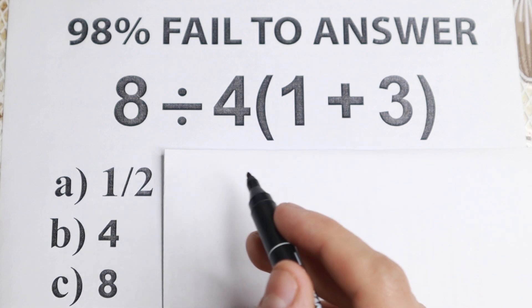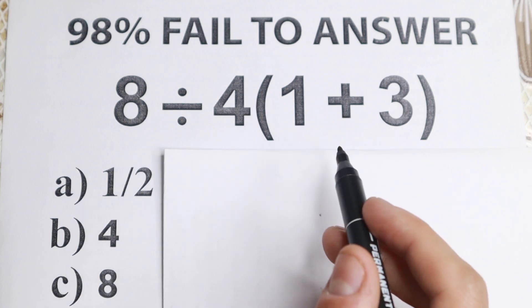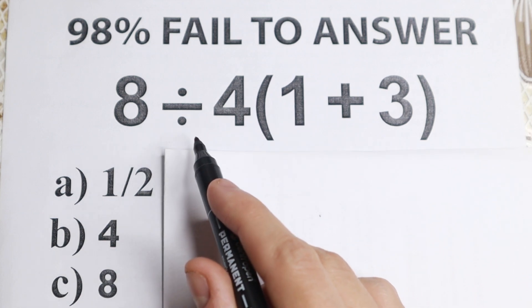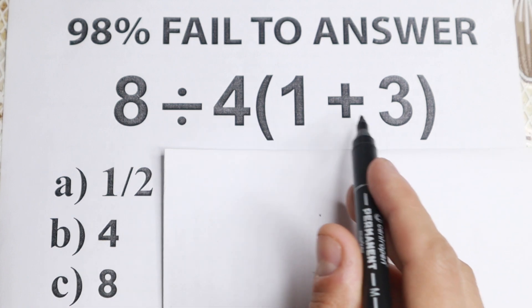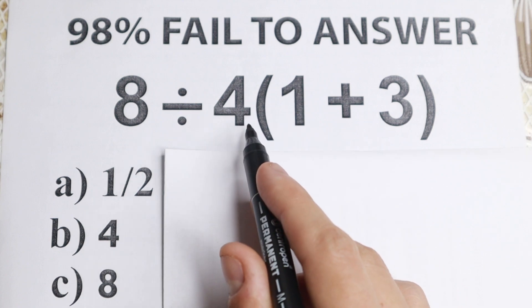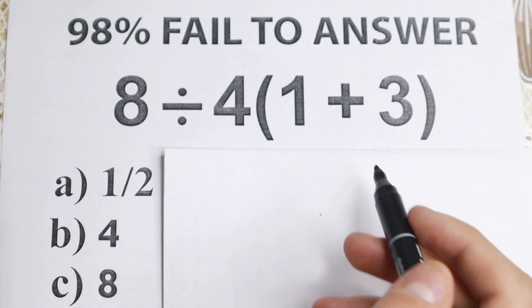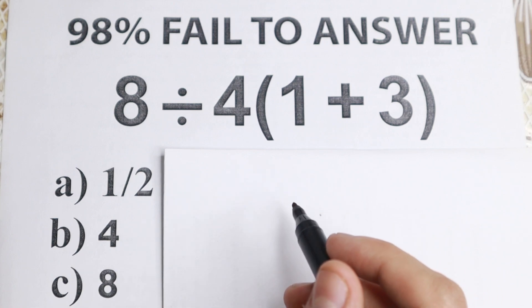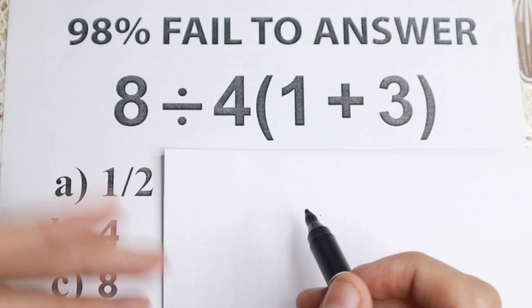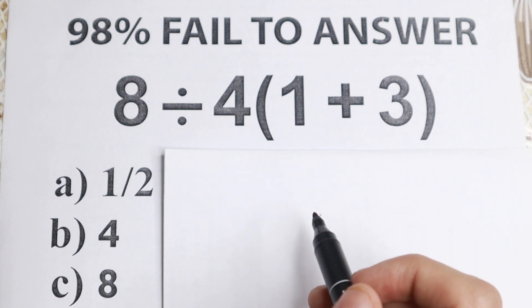Because obviously whatever order you select is going to create a different answer. Should we do division first, then multiplication, then parentheses, or maybe should we add this 1 plus 3 first, then multiply, then divide? It's a really interesting topic because we need to understand what is the correct order to do this problem.